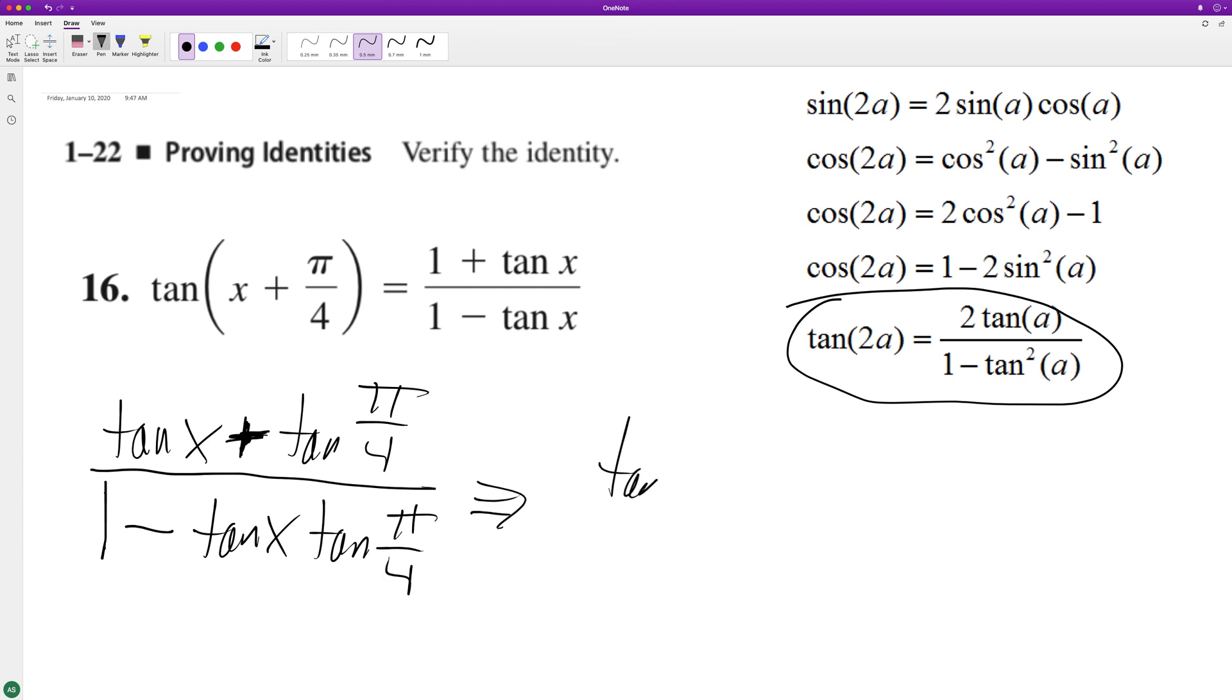So we end up with tangent of x plus tangent of π/4 is 1, over 1 minus tangent of x.